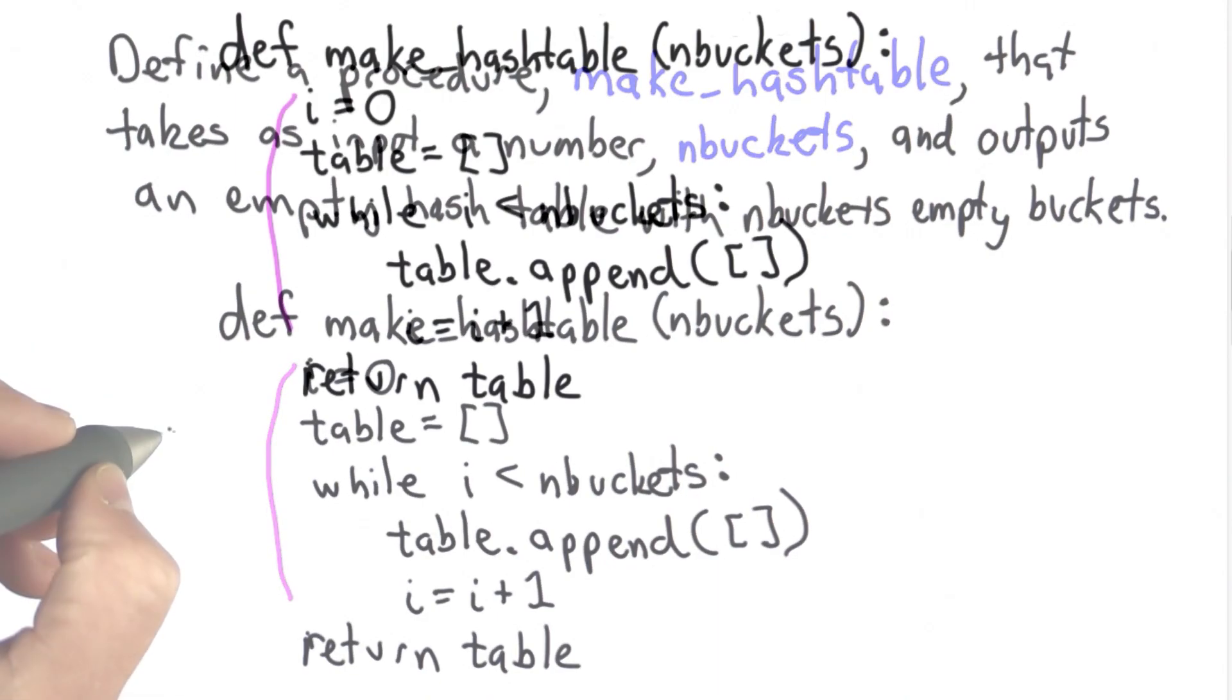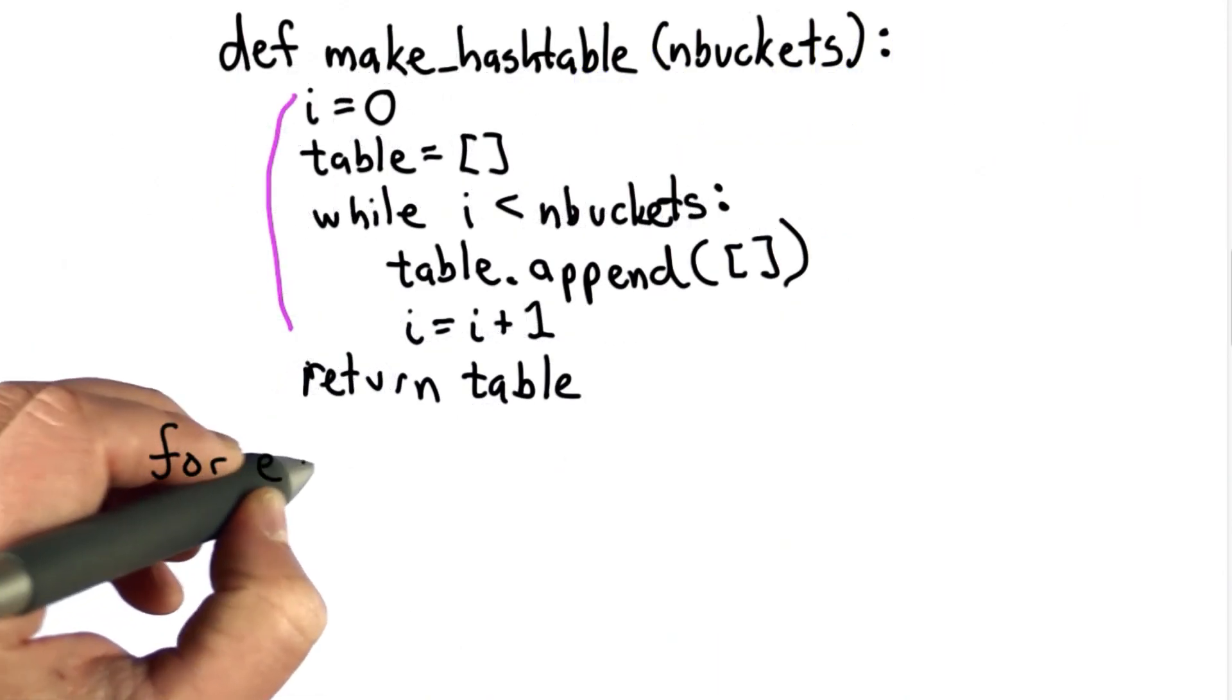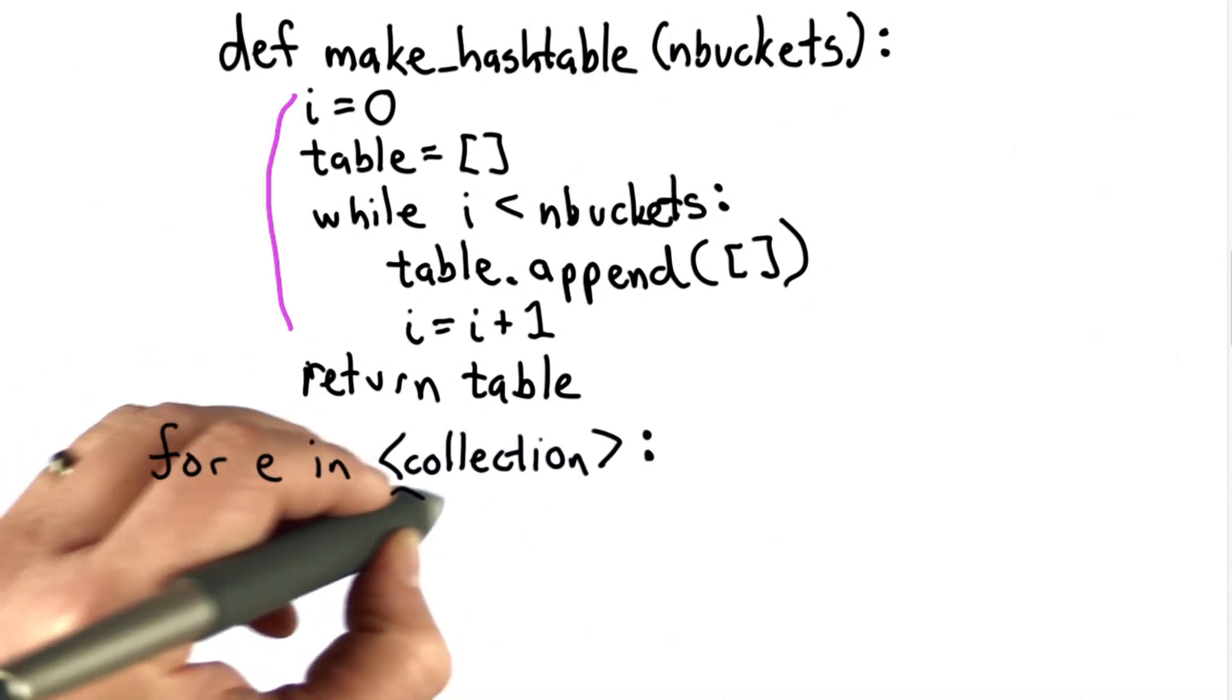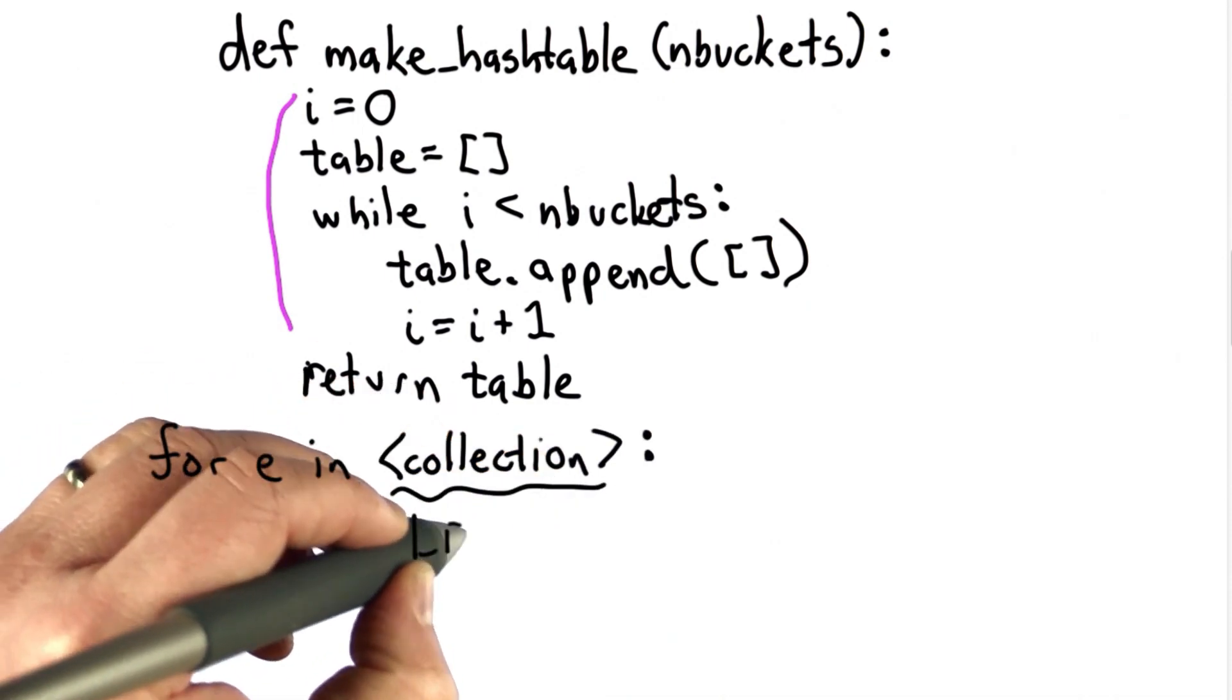So the general structure we've seen for for loops, we've seen a loop that has a structure like this where the collection could be a list, could be a string.